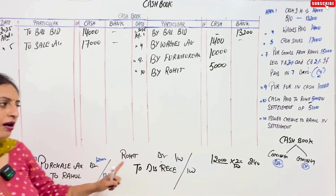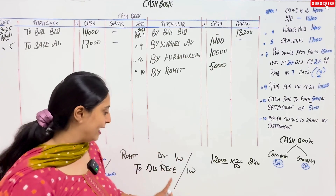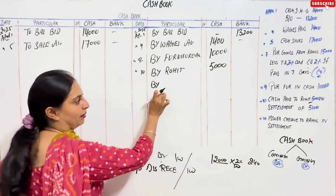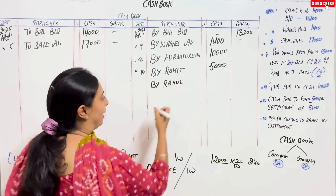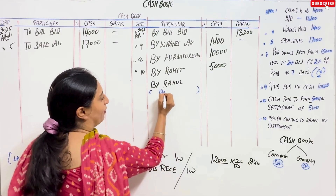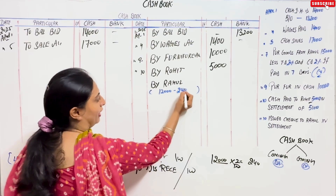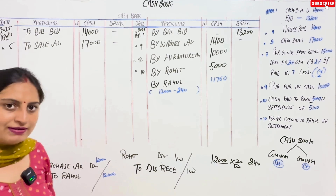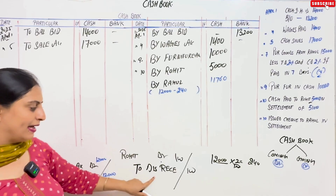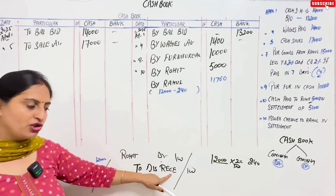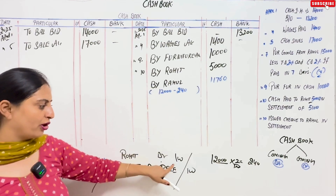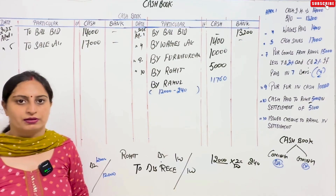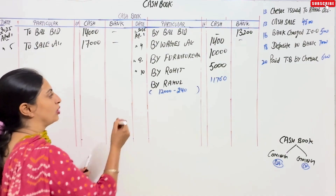You will write the discount of ₹240 in the journal proper: Discount Received credit, Rahul debit, ₹240. This is written in the journal proper. The cheque payment of ₹11,760 is entered on the credit side of the bank column — 'By Rahul' — dated April 10. This entry was for Rahul's cheque payment.